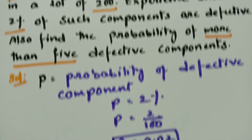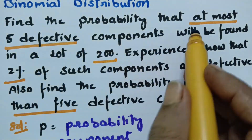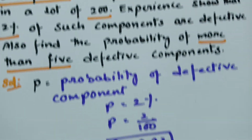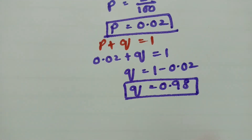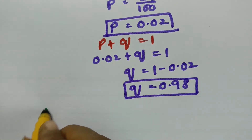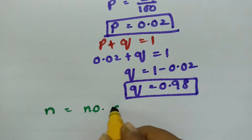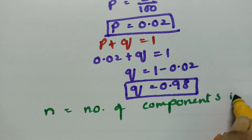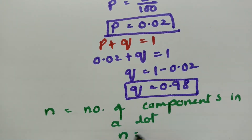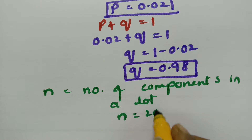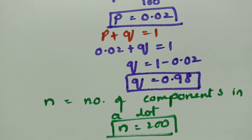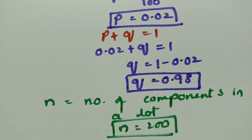From this question, five defective components will be found in a lot of 200, so n is equal to the number of components in a lot. Therefore n equals 200. We now have all the values: p equals 0.02, q equals 0.98, and n equals 200. With p, q, and n known, we can find the required probabilities.